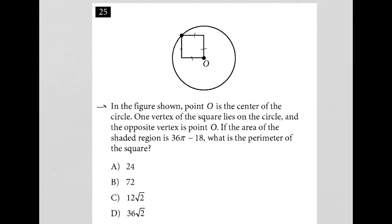One vertex of the square lies on the circle, which we see right here. And the opposite vertex is point O. Yes, we see that there.